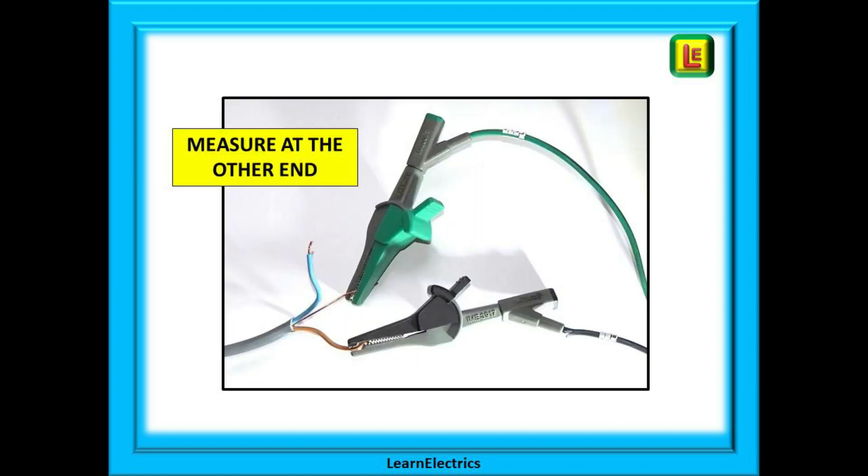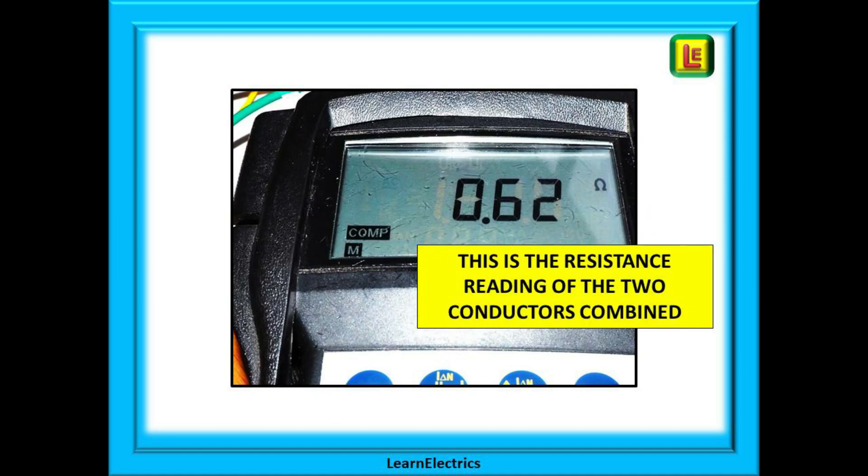At the other end of the cable we keep the conductors separate. Again strip back the brown, connect one lead of your meter to it and the other lead to the earth as shown. With the meter set on low ohms measure the resistance and I recommend you write it down. In our example the cable measures 0.62 ohms. That is the resistance of the brown conductor and the earth conductor combined. We have measured all the way down the brown wire through the connection and back up the earth wire.